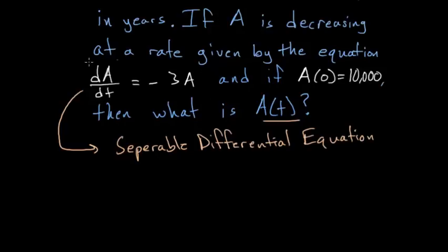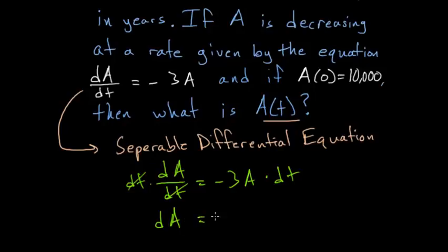And what that means is that we can take this equation and essentially put the two differentials, dA and dt, on different sides, and then integrate with respect to those different differentials. So dA over dt equals minus 3 times A. If I multiply each side by dt, they cancel out over here, so that we have dA equals minus 3 times A dt.